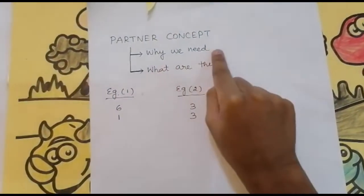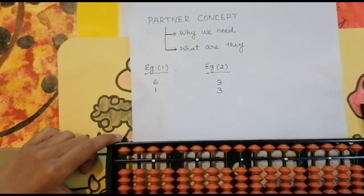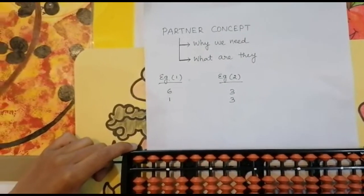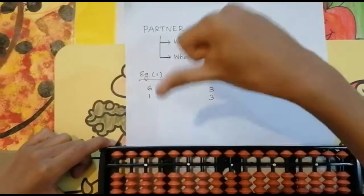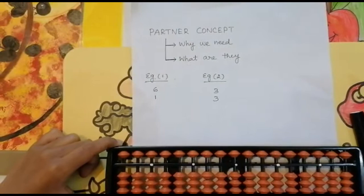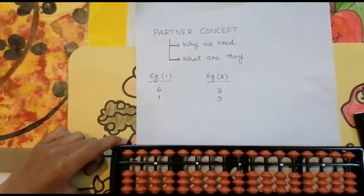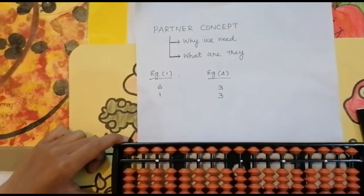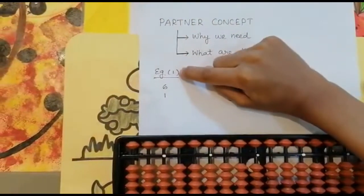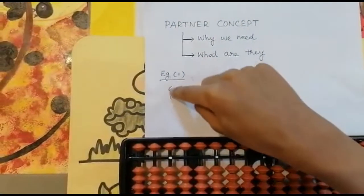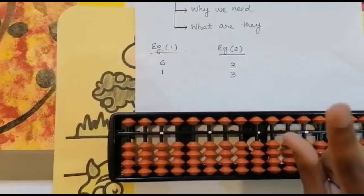First, let us understand why we need the partner concept and what they are. Friends, this partner concept will be a little bit confusing, but if you follow along with me you can easily understand. Along with these two examples I will explain why we need the partner concept. In example one, I need to add six and one bead — go to the units rod.